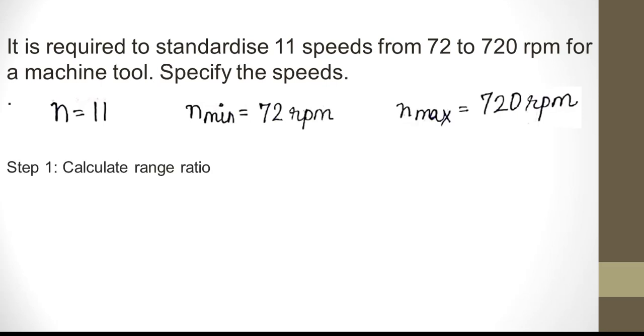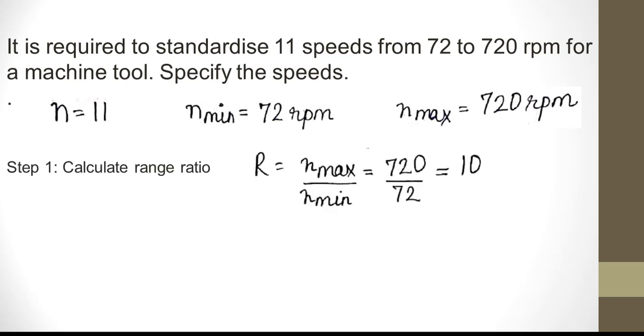First, let us calculate the range ratio. Range ratio R = n_max / n_min = 720 / 72, which turns out to be 10.